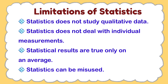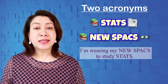Since statistics deals with aggregate of facts, the study of individual measurement lies outside its scope. For example, the wage earned by an individual worker cannot be studied statistically, but the wages of workers of a factory can be. Statistical laws are not exact — results are true only on averages and valid only under certain assumptions, making statistics less exact than natural sciences like physics or chemistry. Also, data can be easily manipulated by people for selfish motives, so it must be used with caution.